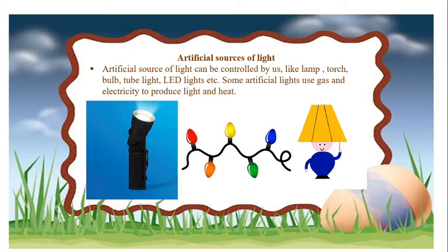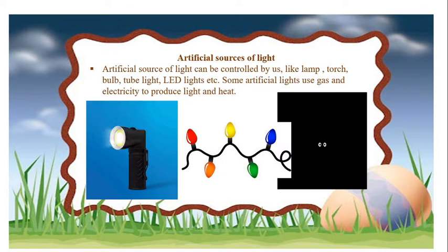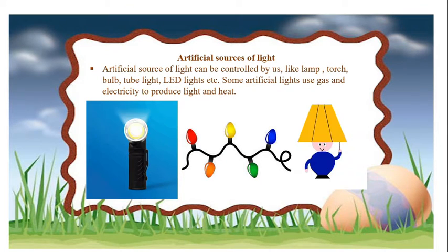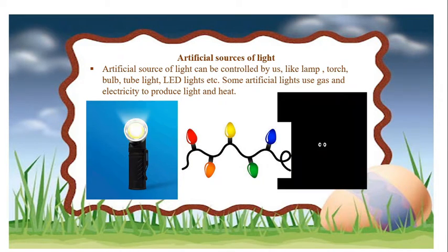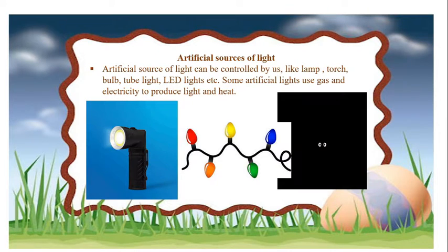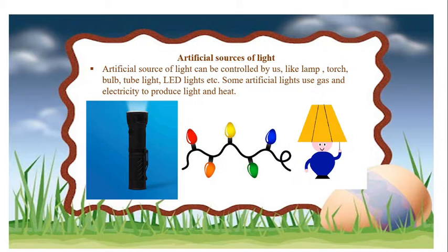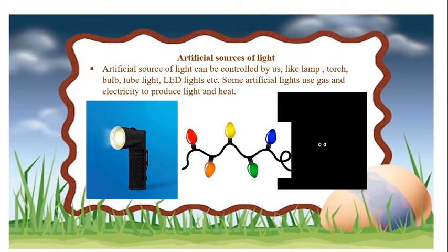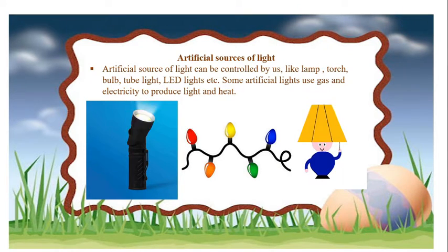Artificial sources of light can be controlled by us, like lamp, torch, bulb, tube light, LED lights, etc. Some artificial lights use gas and electricity to produce light and heat.